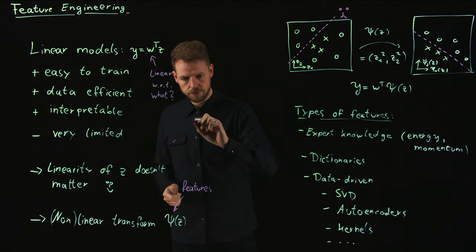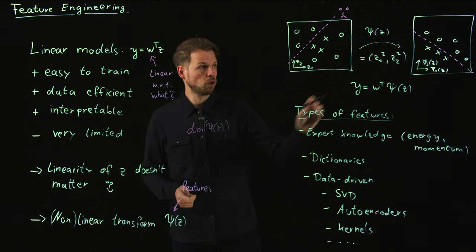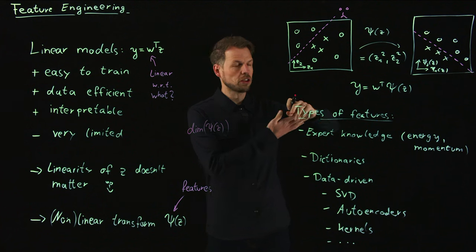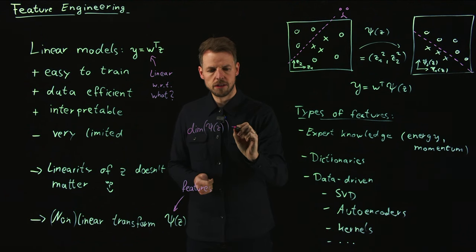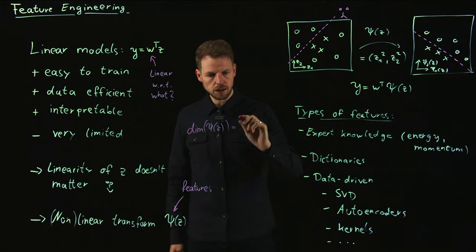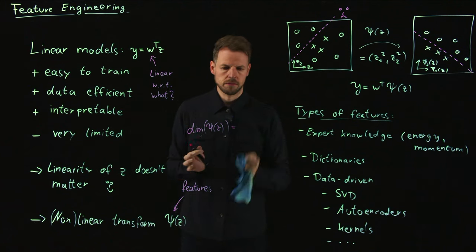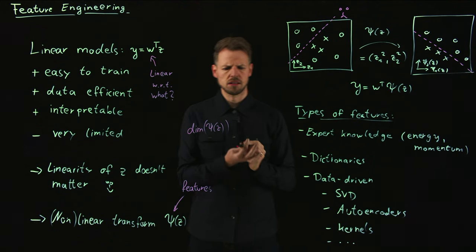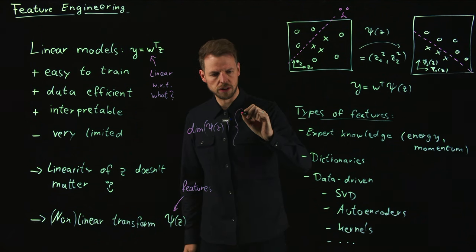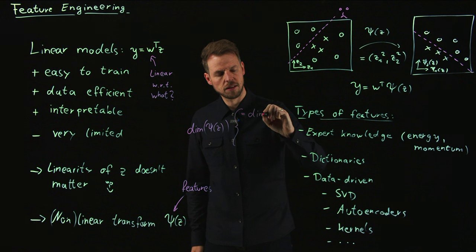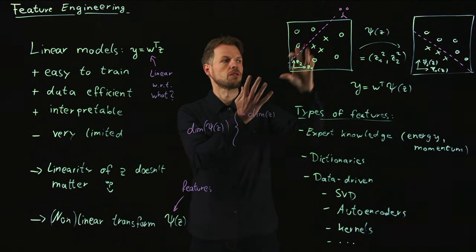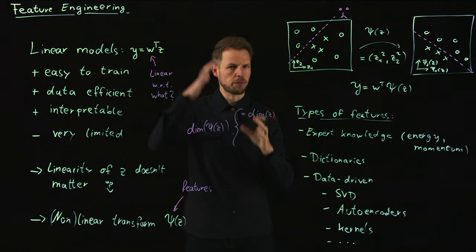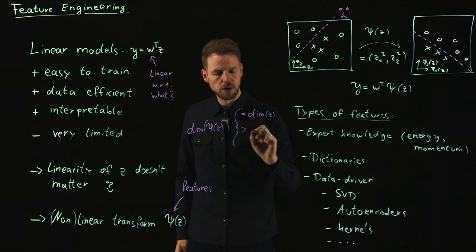Let's close this video with one discussion about the dimension of our Psi of z. Do we increase the dimension or do we reduce the dimension or do we leave it the way it is? This is an important question. It matters very much and has to do with the application that you're interested in. You can keep the dimension the same. You do not increase the dimension, neither decrease it. You just find a transformation that is more useful in terms of linearly separating two classes.